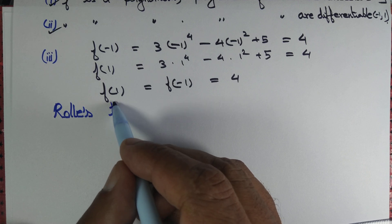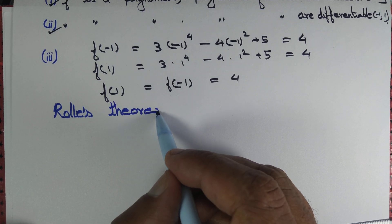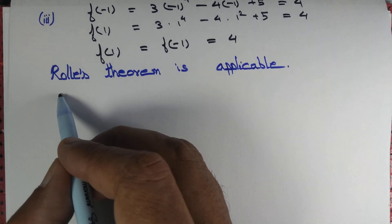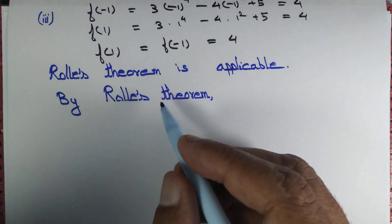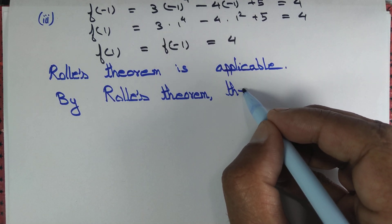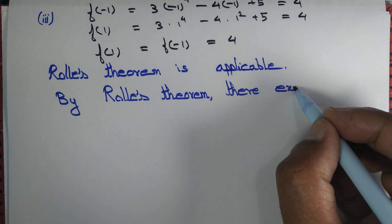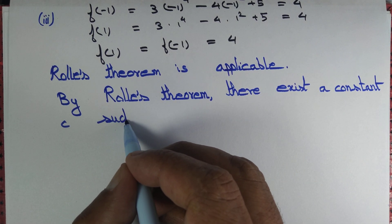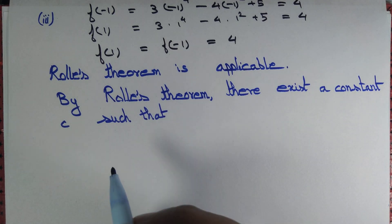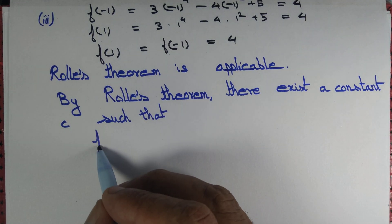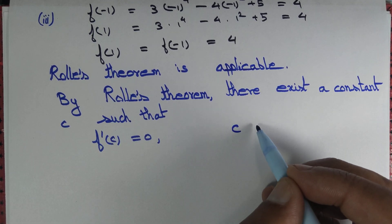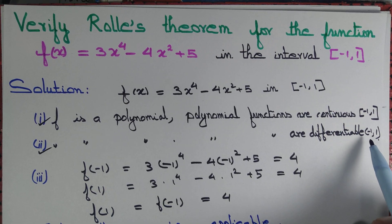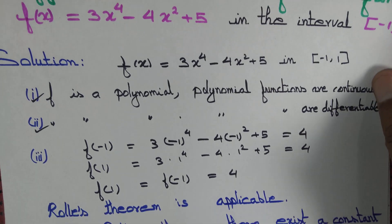Since all three criteria are satisfied, Rolle's theorem is applicable. By Rolle's theorem, there exists a constant c such that f'(c) = 0, where c belongs to the open interval (-1, 1).